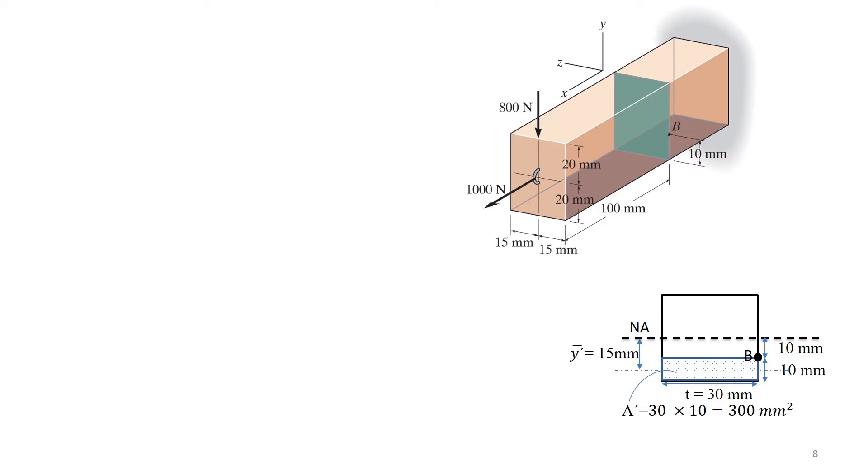The first step is to section the member at point B. The second step is to obtain the internal normal and shear stresses. Also, we must calculate the moment components M and T.